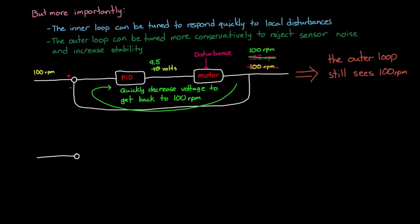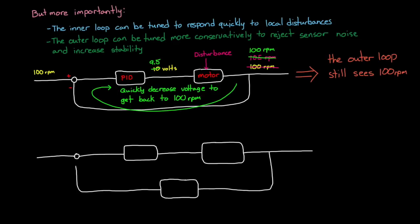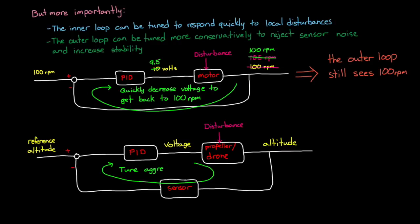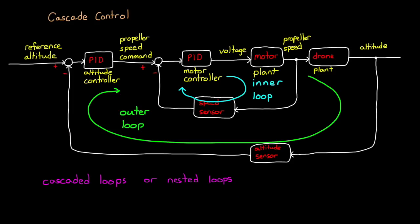If the inner loop is fast enough, the motor disturbances wouldn't even be seen by the outer loop because there wouldn't be a noticeable change in altitude. This would allow the outer loop to be much slower and only respond to relatively slow disturbances like wind gusts. If there was only a single loop, the altitude controller would have to sense that tiny change in altitude and quickly adjust the motor voltage in that fraction of a second — but if tuned that aggressively, it would also respond quickly to altitude sensor noise, which is not ideal. So it's a much better system to have cascaded loops, with each loop targeting a different set of reference points and disturbances.